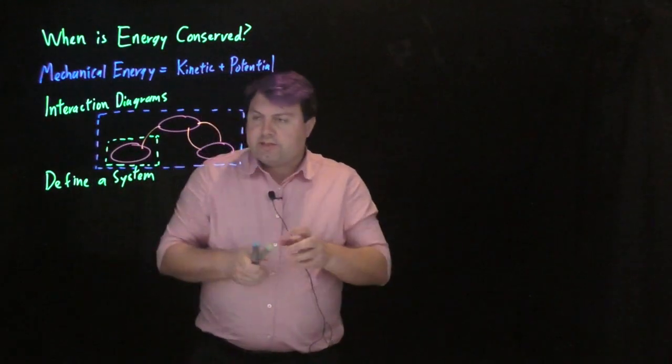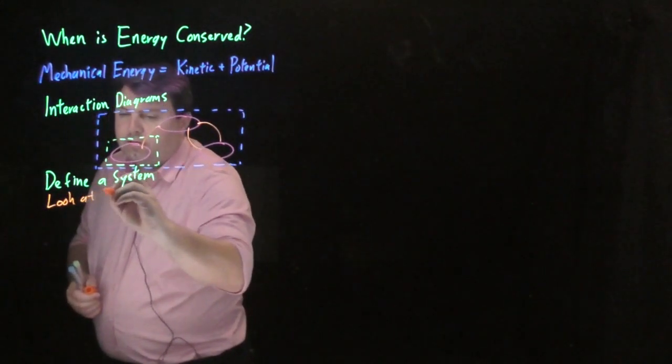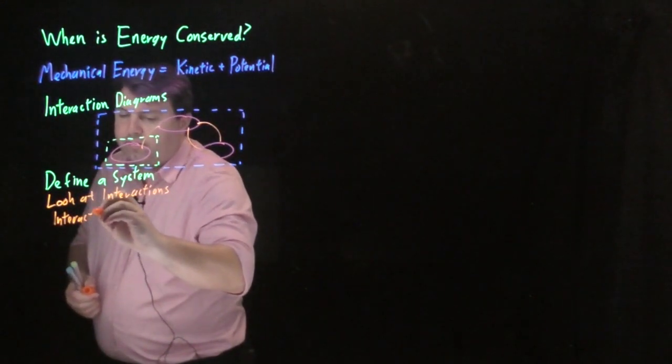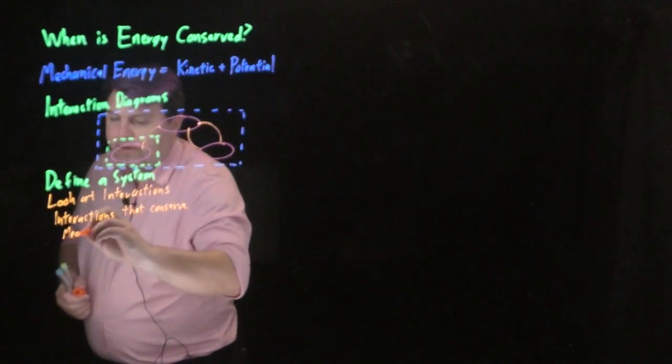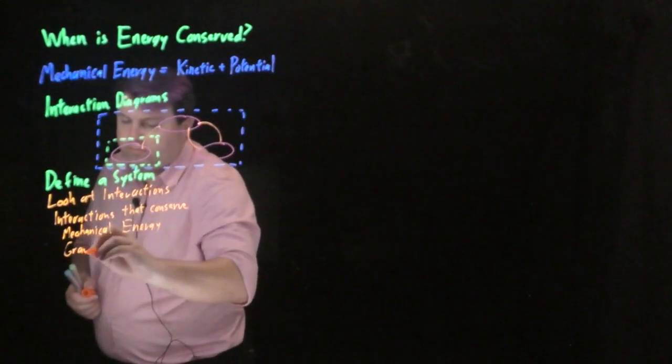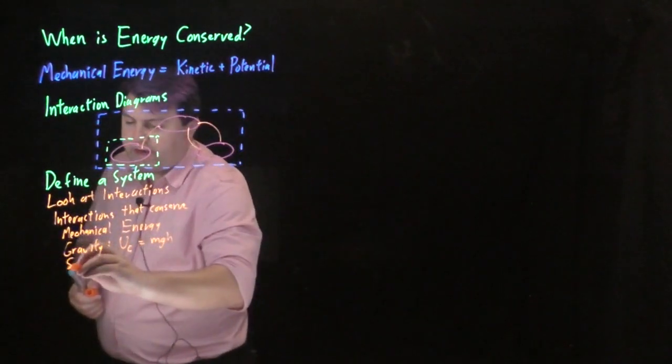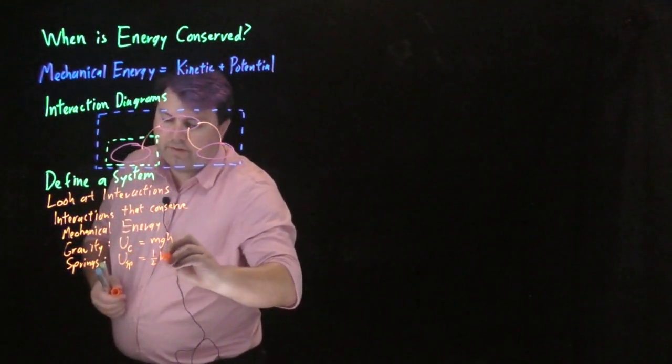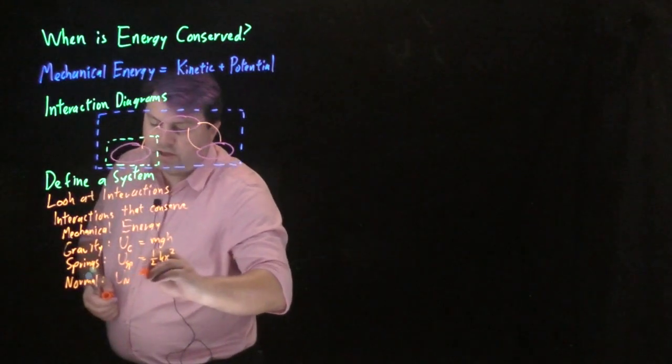What we're doing in this is that we're then looking at the interactions. And we have interactions that conserve mechanical energy. This would be gravity, where the potential energy from gravity is mgh. We have springs, where the potential energy from springs is 1/2 kx². We have the normal force, where we found that the potential energy from the normal force is 0.